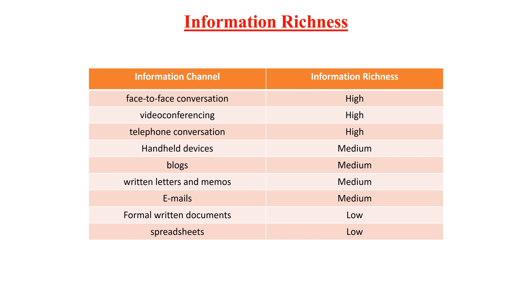Handheld devices, blogs, and written letters and memos offer medium-richness channels because they convey words and pictures or photos. Formal written documents such as legal documents and spreadsheets — such as the division budget — convey the least richness because the format is often rigid and standardized.